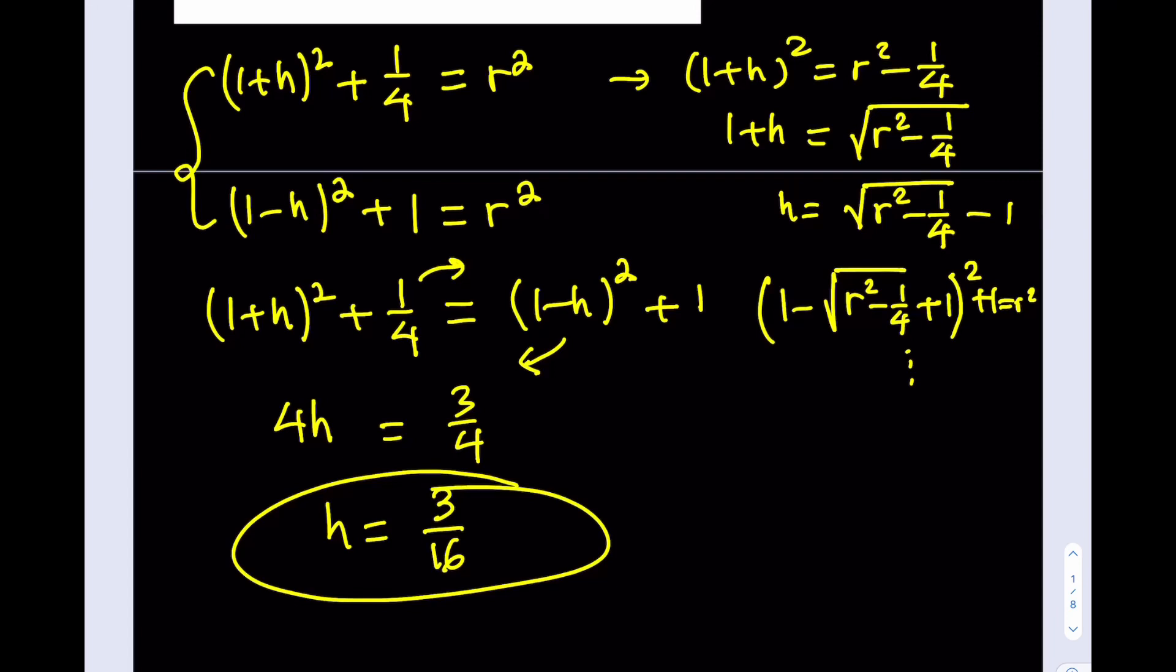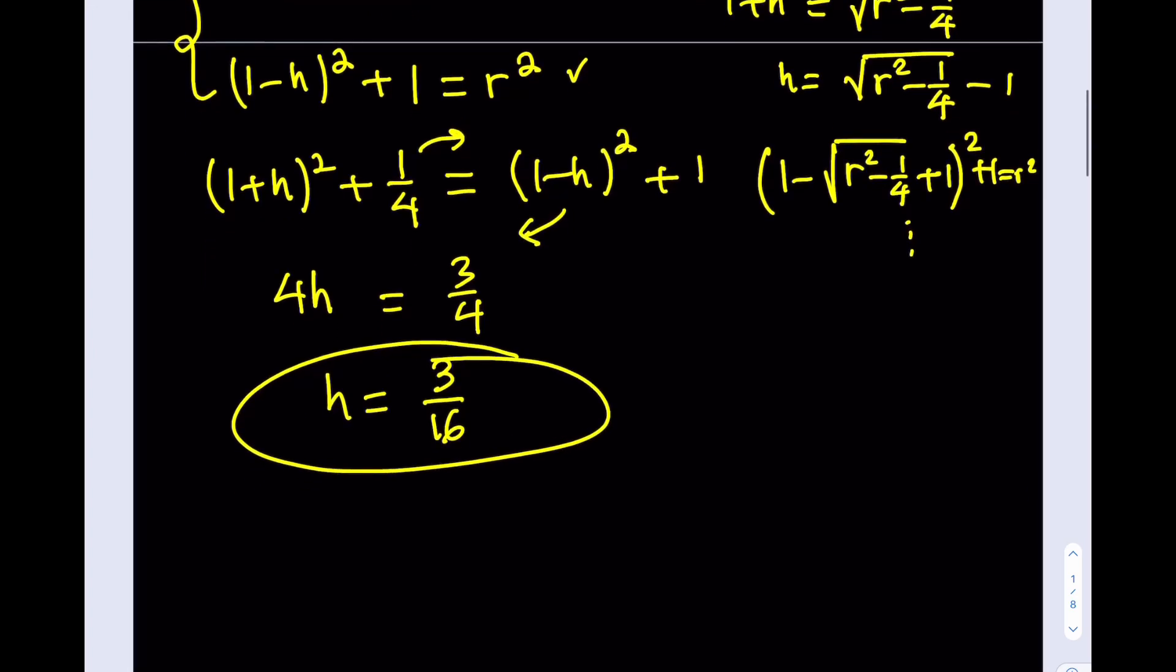So now we know that h is equal to 3 over 16, I can go ahead and plug it into one of these equations. It doesn't matter which one because both of them are going to give you the same answer. So it's a matter of choice. Which one do you want to go by? I'm going to pick the second one, all right? So I'm going to go ahead and plug in, replace h with 3 over 16, okay?